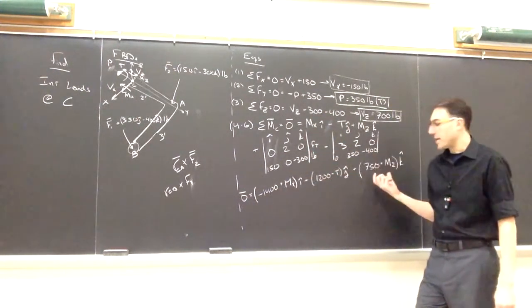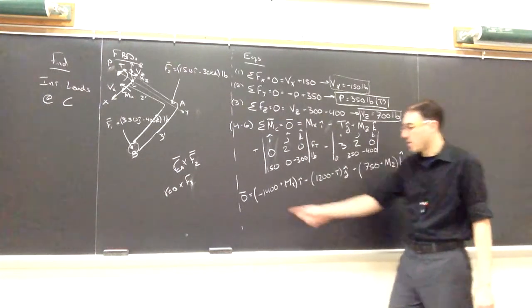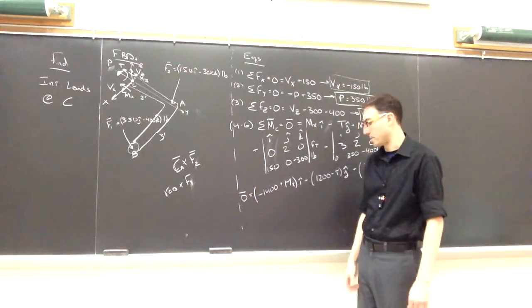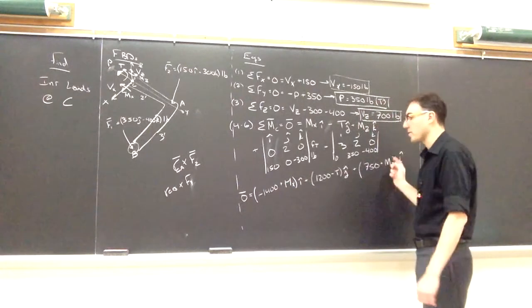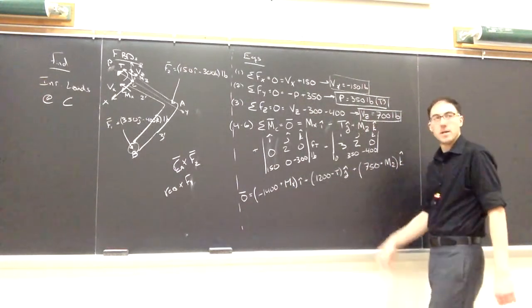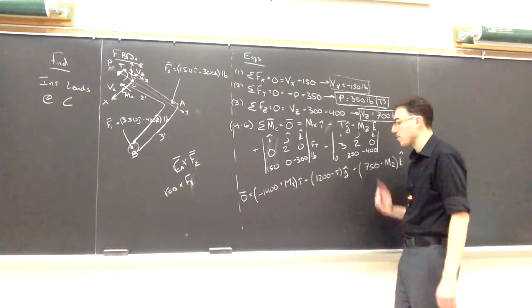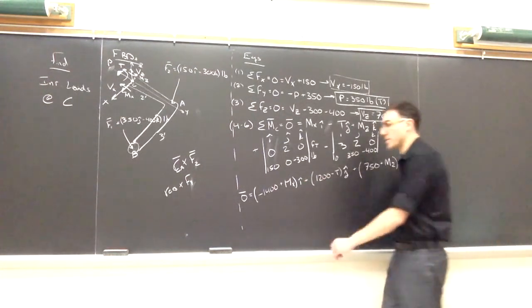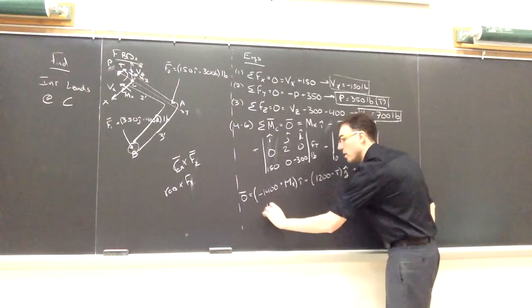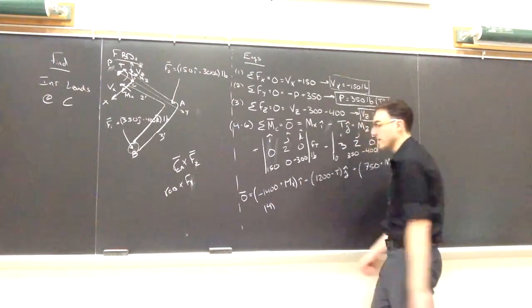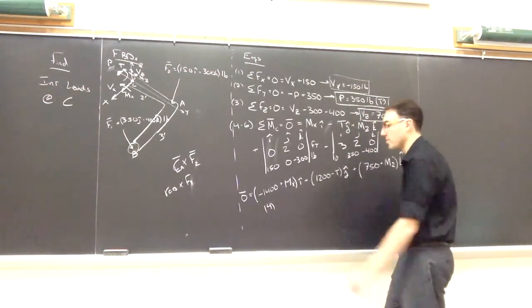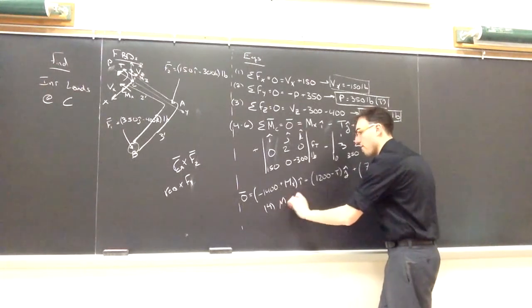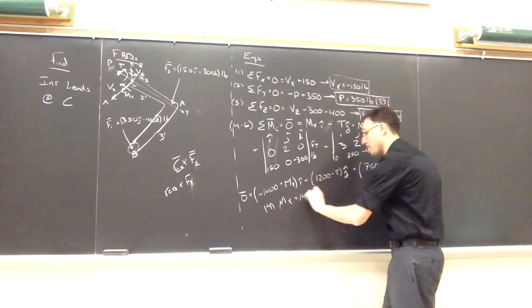Individually, each coefficient has to be equal to zero since my left-hand side is zero I plus zero J plus zero K. So this vector equation with I's, J's, and K's, I can get three scalar equations out by setting each of these coefficients individually equal to zero. So my equation four, I'm going to get that zero equals negative 1400 plus MX. Therefore, MX must be 1400 pound-feet.